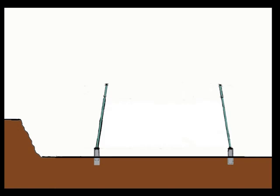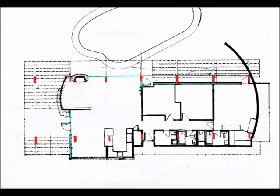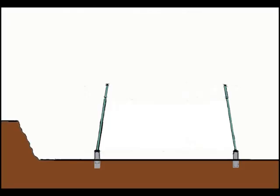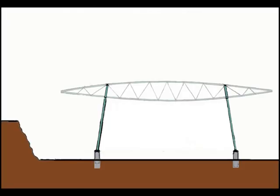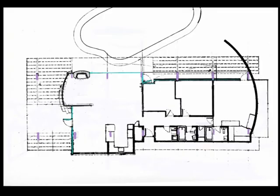The construction started with concrete foundations and steel pillars that were placed in the ground. These pillars are standing slightly diagonal — a total of 14 pillars, seven on each side of the house. These pillars support seven oval steel trusses that are placed across the width of the house.